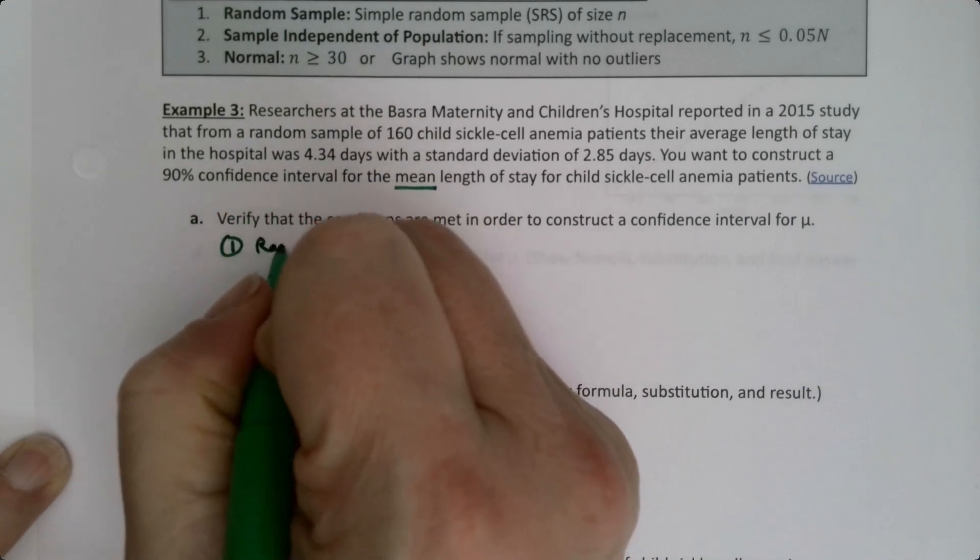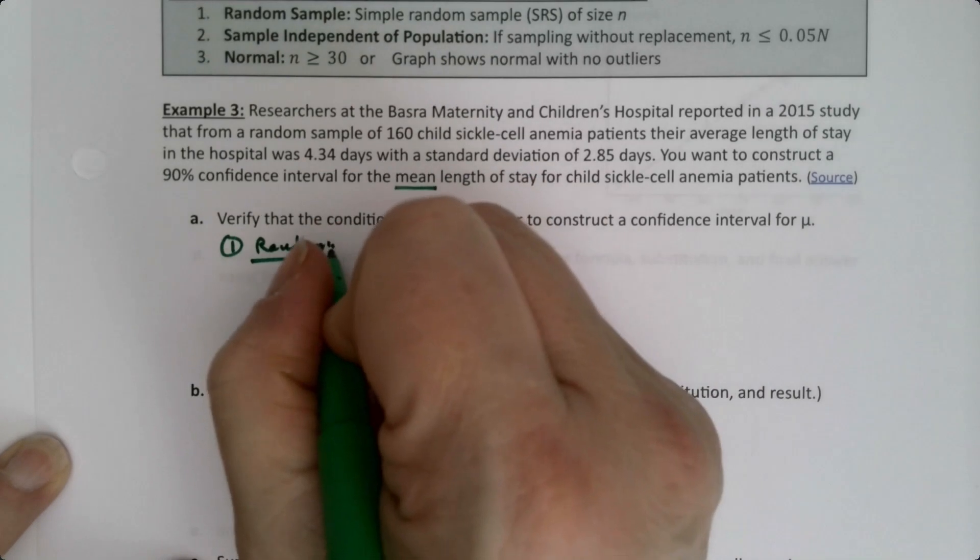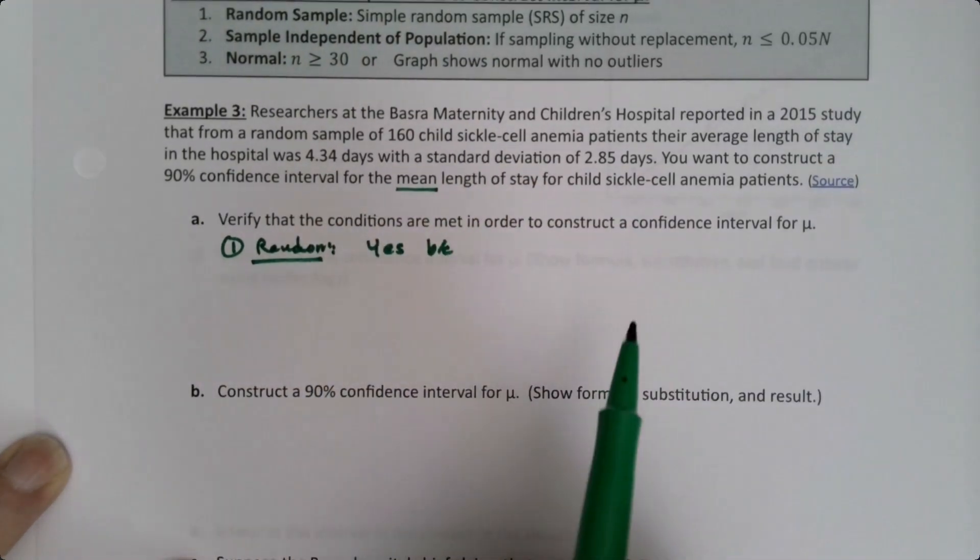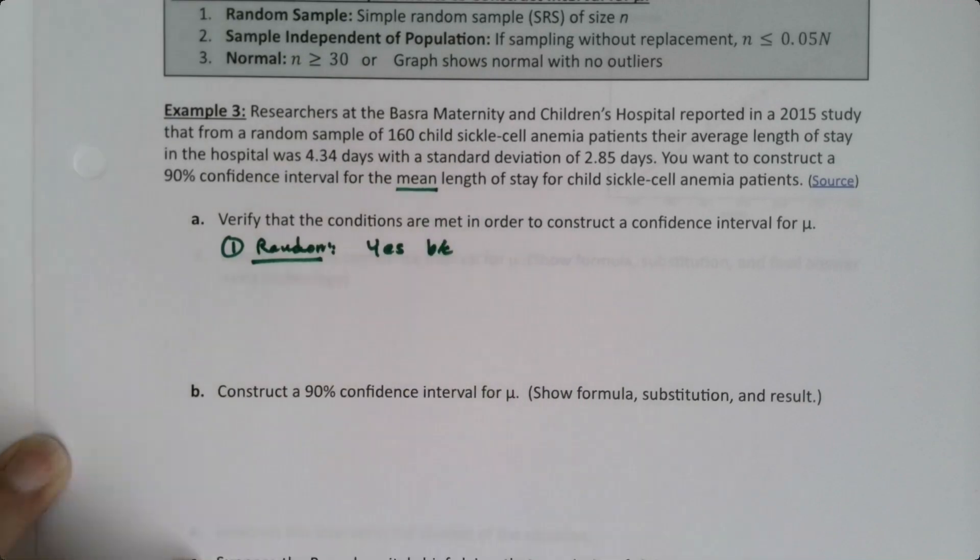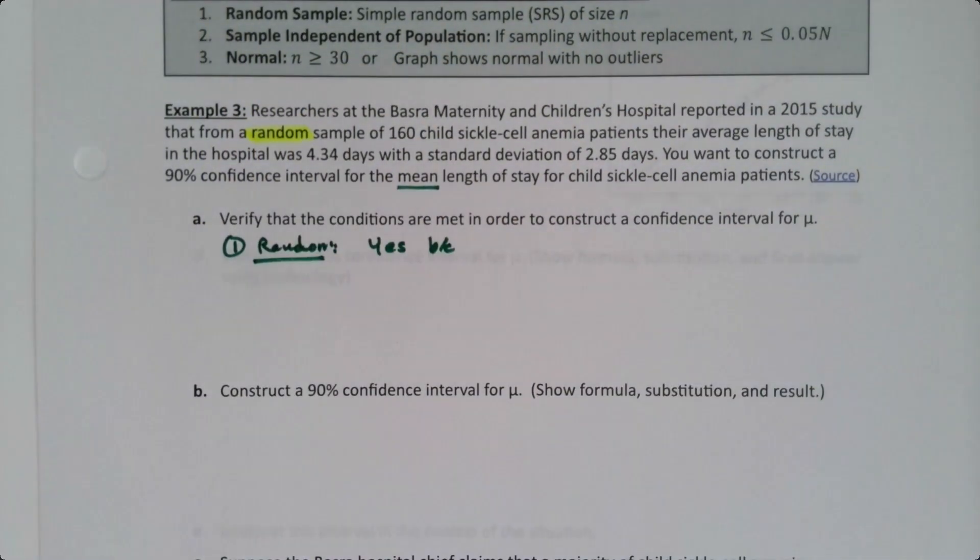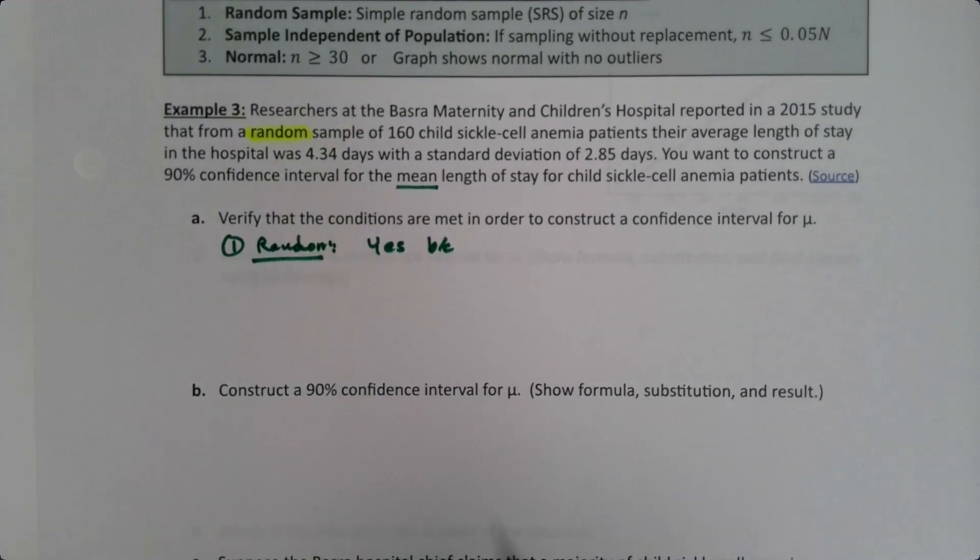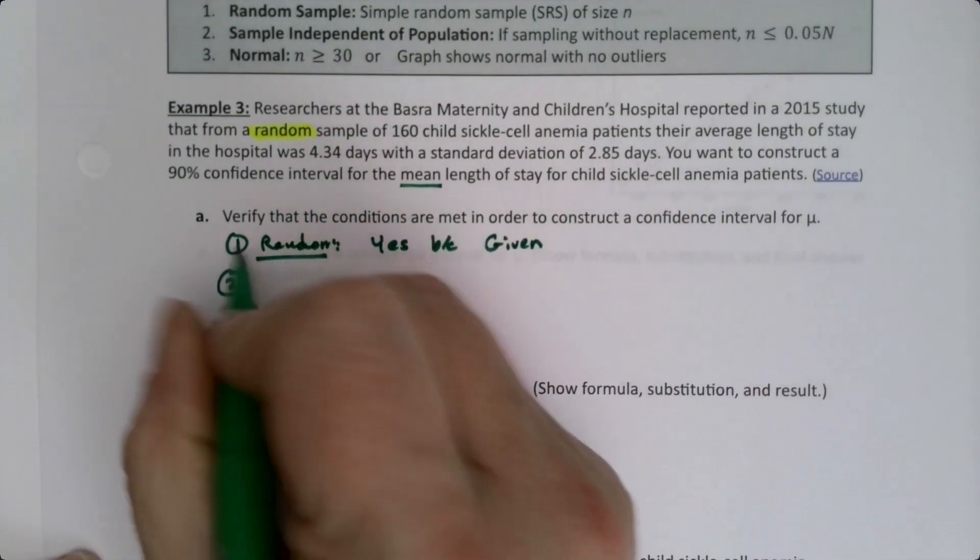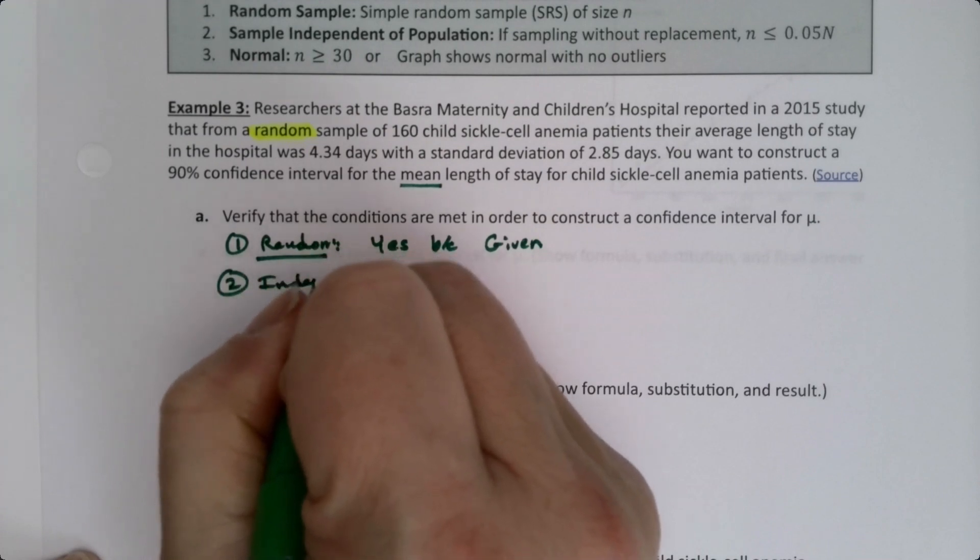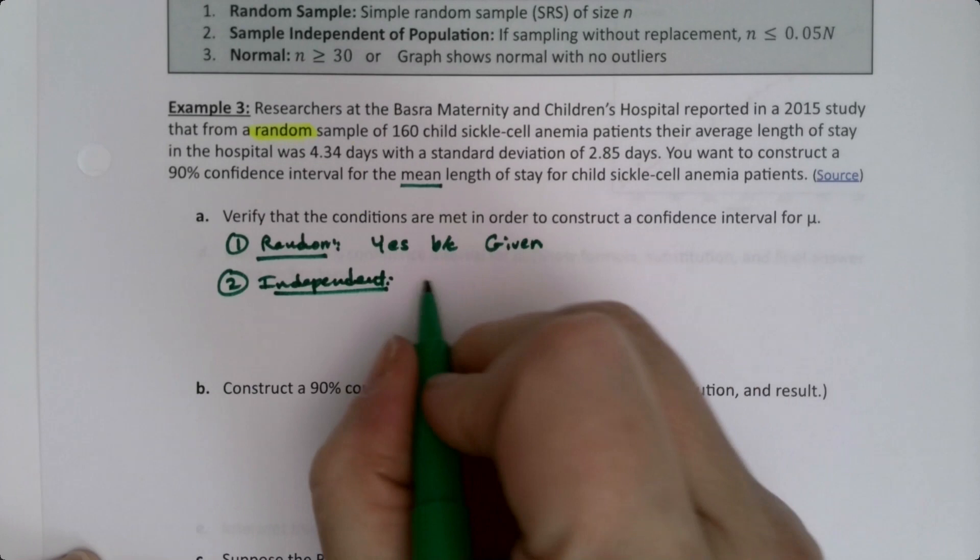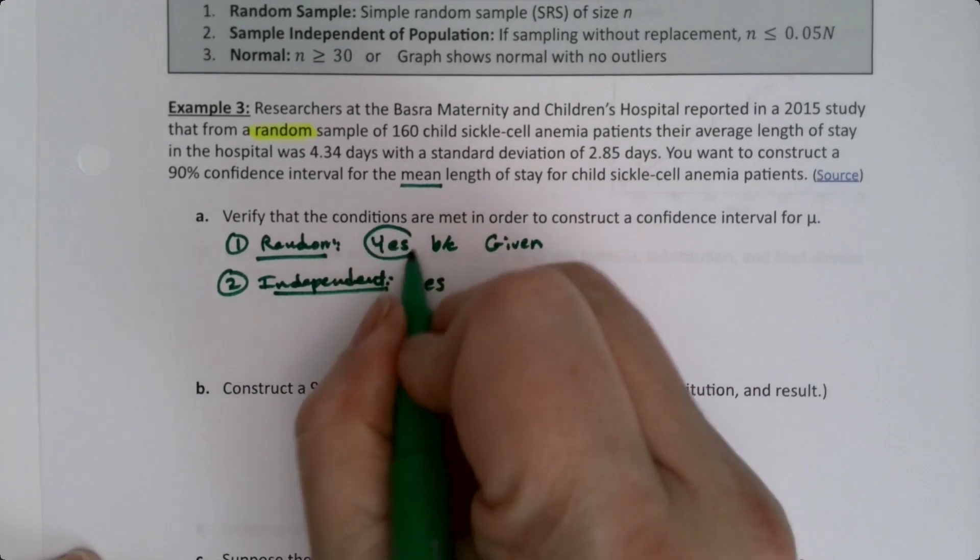So we want random. I'm assuming I wrote it in there somewhere. Let's see here, random sample, said it right here. So that's given. Good, we like that. Easy. Step 2, Independent. Okay, so we've got to prove this one. I mean, it's going to be yes, but we've got to know why.